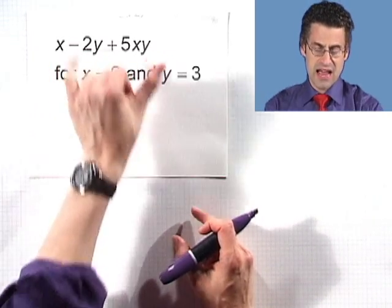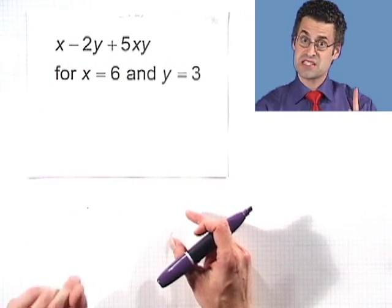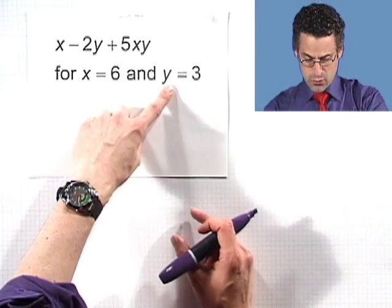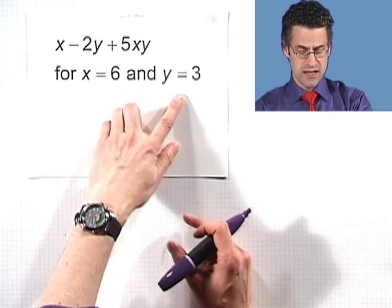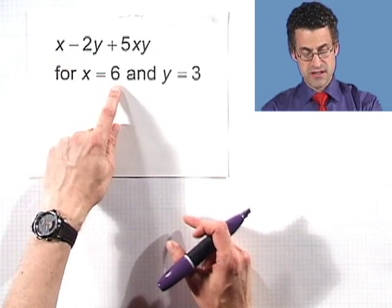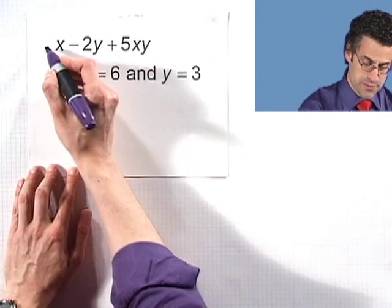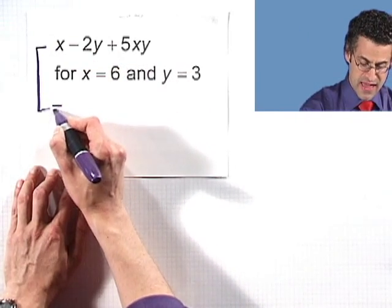And I want us to write down what that equals in the special case when x takes on the value six and y takes on the value three. And so what would we see? Well, wherever we see an x we're going to insert six and whenever we see a y we're going to insert three. So this expression becomes, in that case,